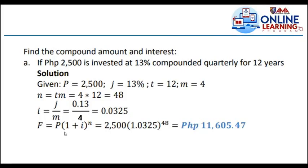Okay, so the future value is equal to P times 1 plus i raised to n. So we have 2,500 multiplied by 1.035 raised to 48. We have a total of 11,605.47 after 12 years.